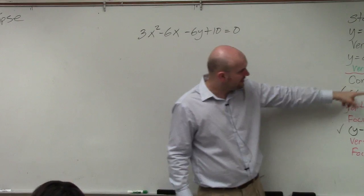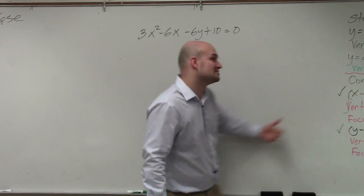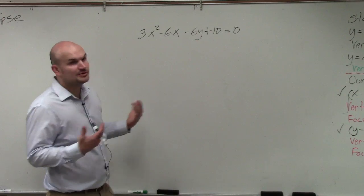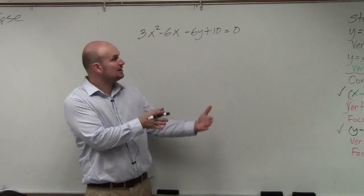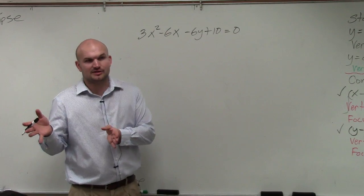You notice in vertex form we again have binomials squared. So that's going to tell me I need to complete the square. So here's basically the process. If you guys look at those formulas, you see x's are on one side, and then basically the y's and everything else is on the other side.